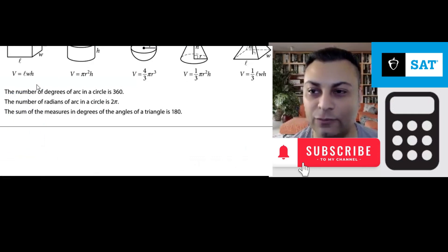And over here in the formula sheet it says the number of degrees of arc in a circle is 360. The number of radians of arc in a circle is 2π. That means 360 degrees is the same as 2π in radians. We'll use that. Let's go back to the question.